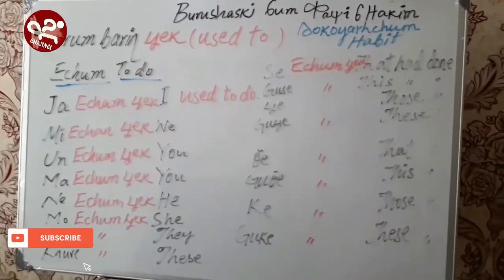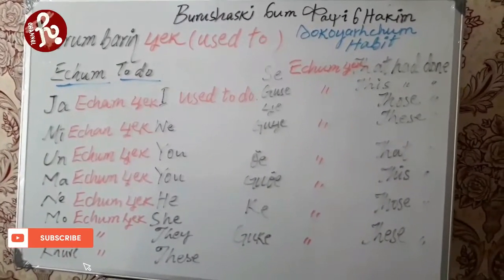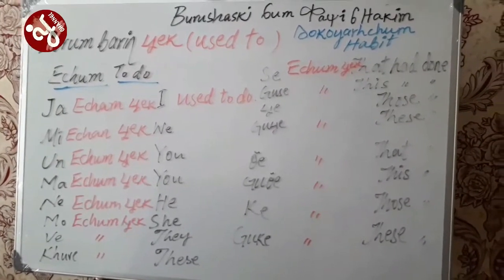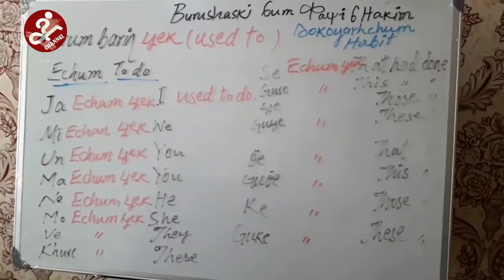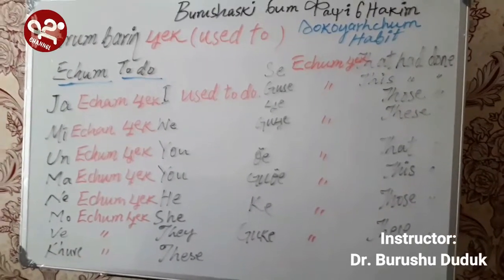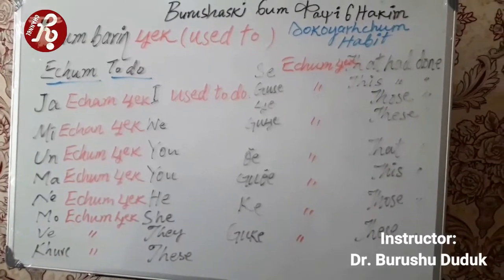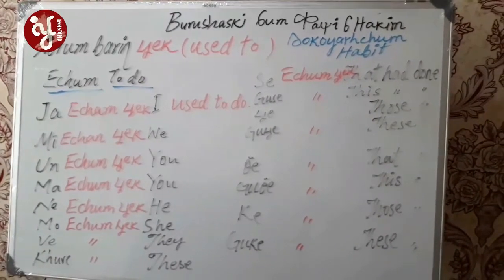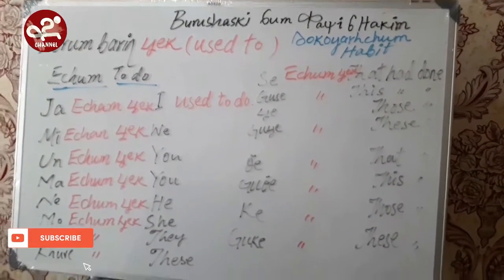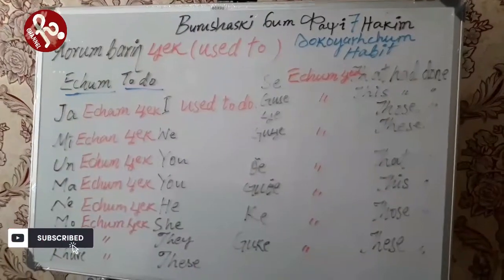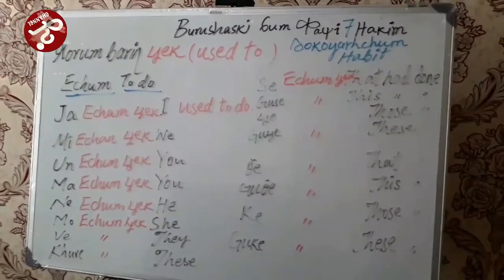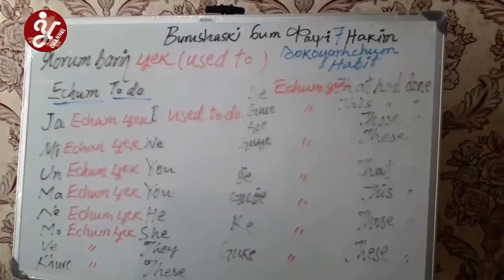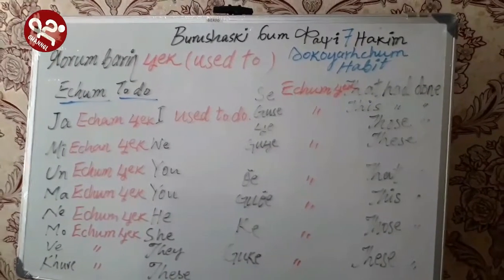Hello friends, welcome to all of you. We will talk about habit — a habitual matter that you habitually do or you did in the past, not in the present but in the past. That is called a habit. This is Chapter 6, Lesson 7, and it is about the past tense.